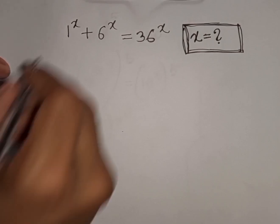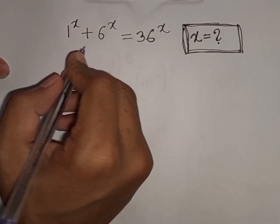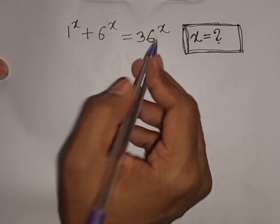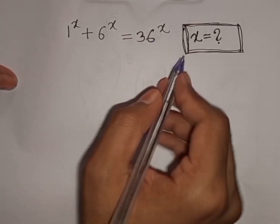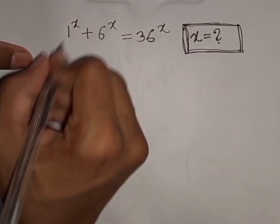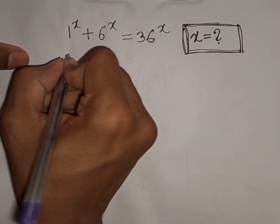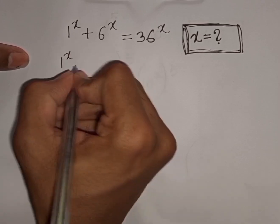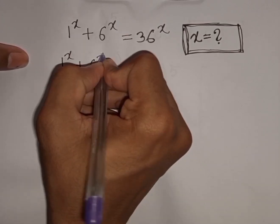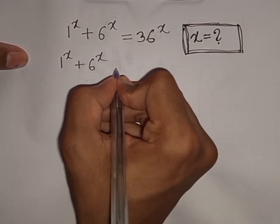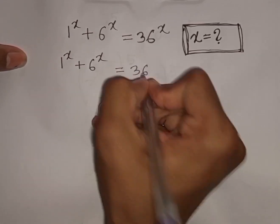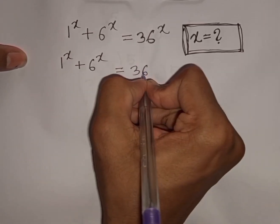How to solve 1^x + 6^x = 36^x. Find the value of x. So we have 1^x + 6^x = 36^x.